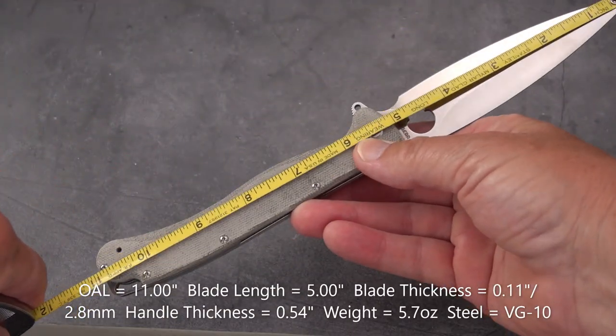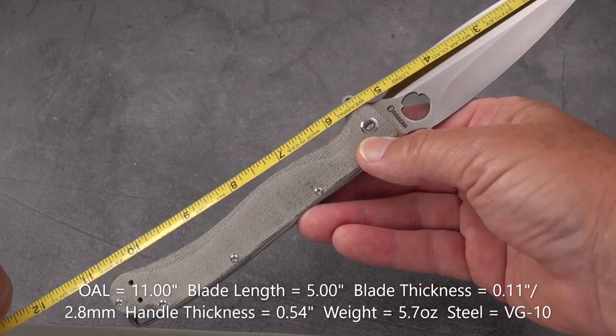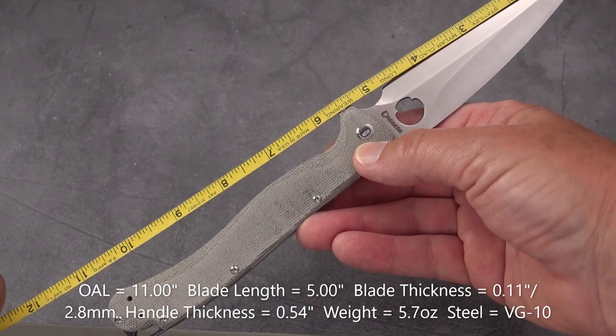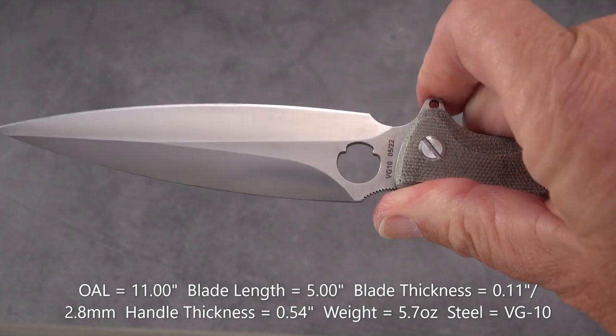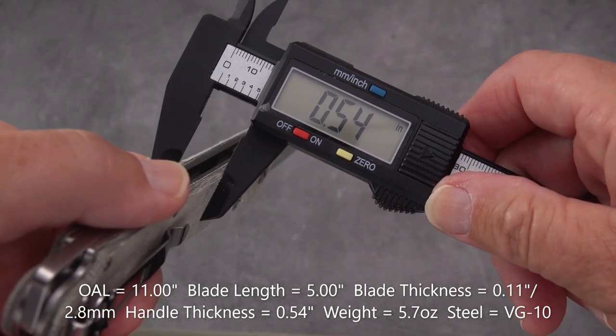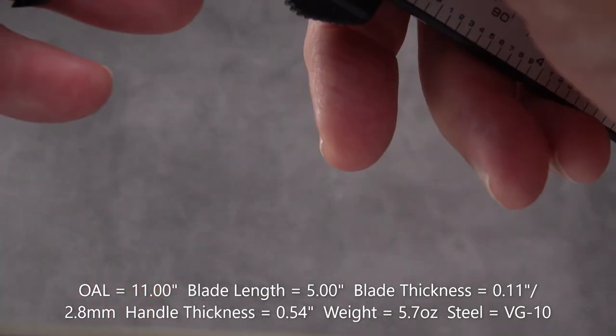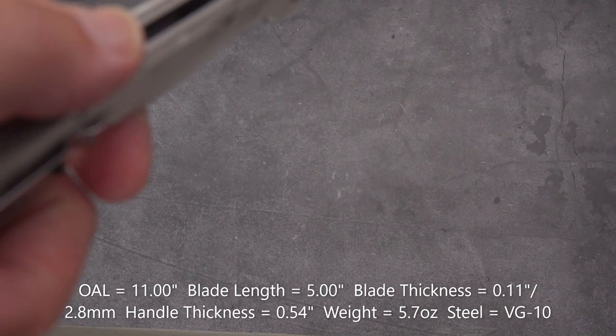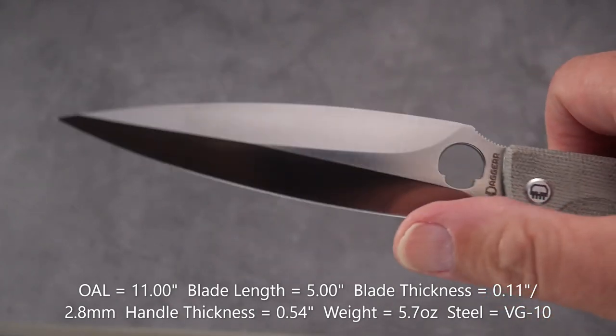Let's take a chance here and see if we can get the entire knife in for a measurement session. We have an 11-inch knife just shy, a blade of 5 inches, a cutting edge of almost four and three-quarters because we do have a usable finger choil. Handle thickness is 0.54 inches. Blade thickness is 0.10 or maybe 0.11 inches - 2.8 millimeters.